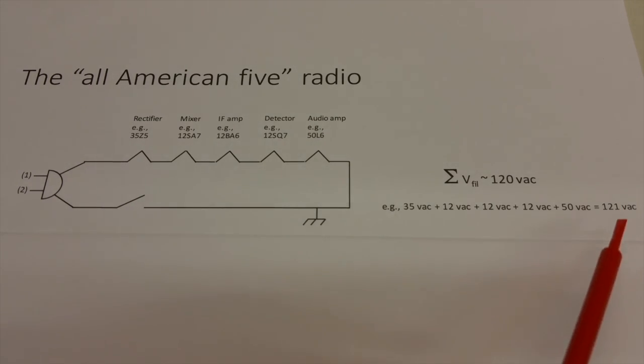If you add the filament voltages up there, you get 121 volts. And at the time that this design was popular, line current in the United States was somewhere in the neighborhood of 115, 117 volts. So you can see that this would work very efficiently.